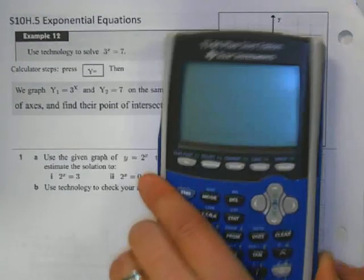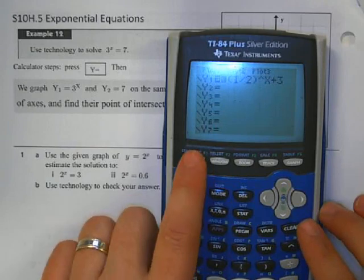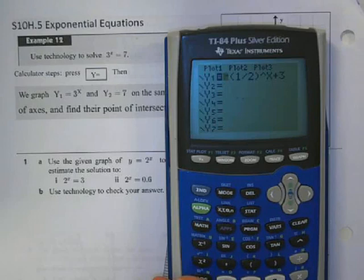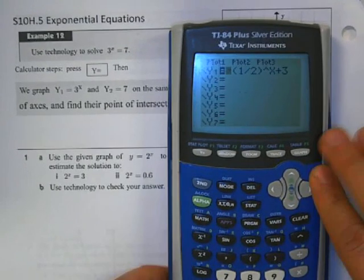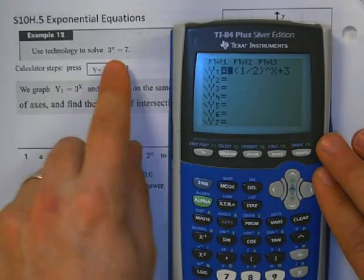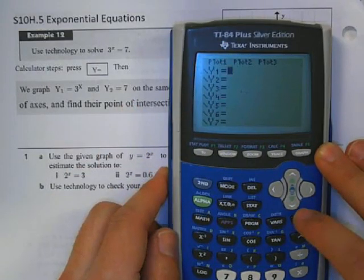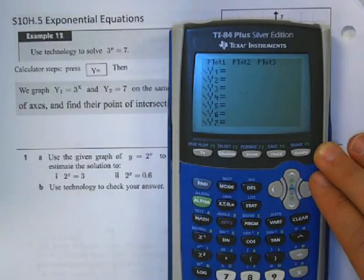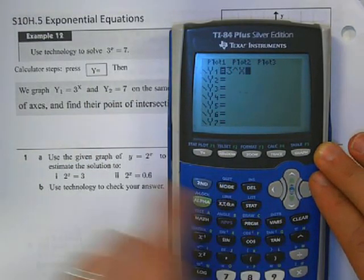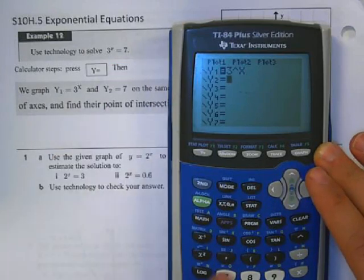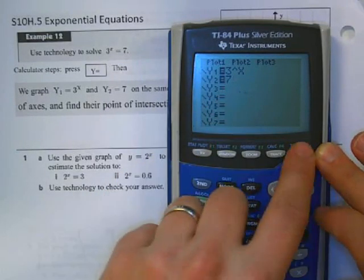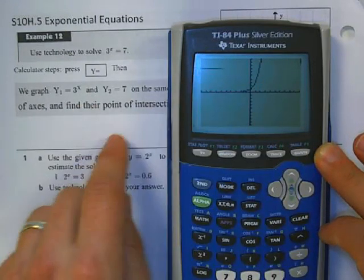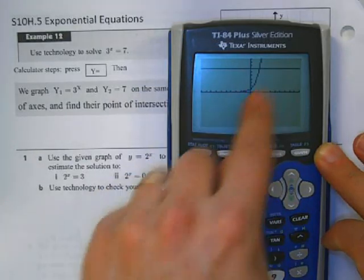So what they want you to do is we're going to hit y equals, and then we're going to try to have our two equations. I'm going to type in the equation 3 to the power of x, and I'm also going to type in 7. That's going to give me a horizontal line at 7, and this curved line here is my exponential 3 to the x.